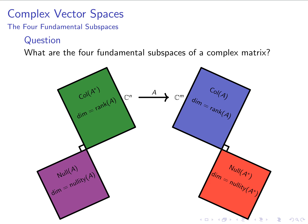Let's use the language of complex matrices to talk about complex vector spaces. A natural question is: what are the four fundamental subspaces of a complex matrix? The column space is still defined as all linear combinations of the columns, and the null space is still all solutions to Ax = 0. When working with complex matrices, we no longer call it the row space — we study the column space of the conjugate transpose. And we study the null space of the conjugate transpose instead of the left null space.